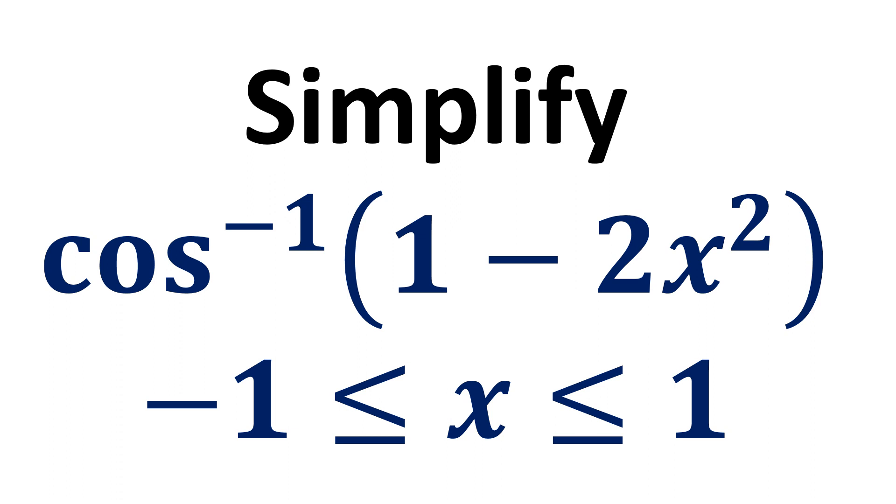In this video, we learn to simplify inverse of cosine of 1 minus 2 times square of x. Here, value of x is greater than or equal to minus 1 and is less than or equal to 1.